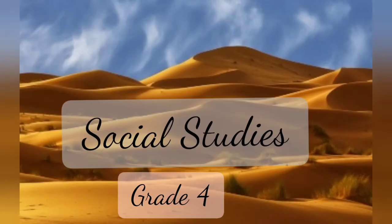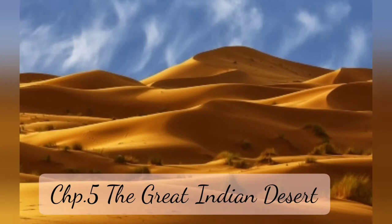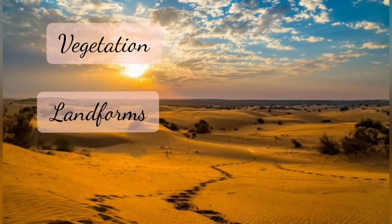Hey friends, I hope you all are fine. Let us start with chapter number five — the further portion that we are studying. Chapter number five: The Great Indian Desert. In the last session we studied about the location of our great Indian desert, where it is located and how vast it is situated. We also studied about the climate, so let's start with the further portion: vegetation, landforms, and life in the desert regions of Rajasthan.